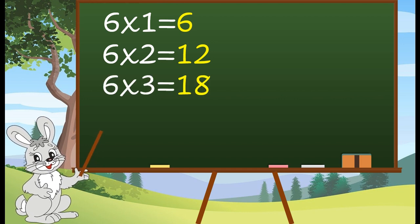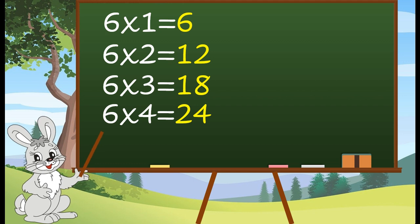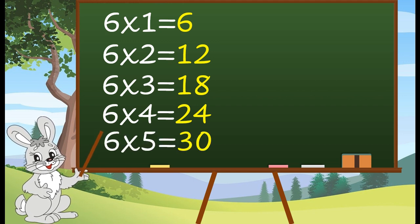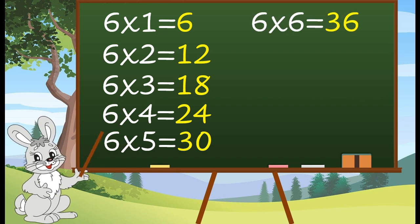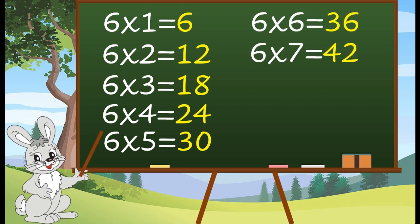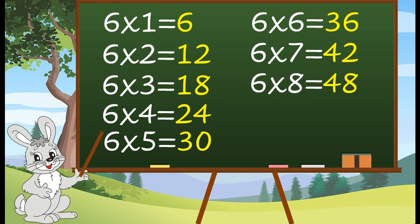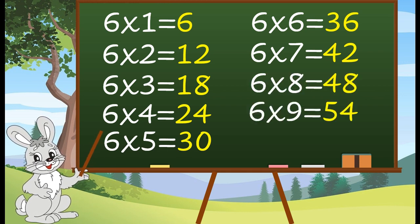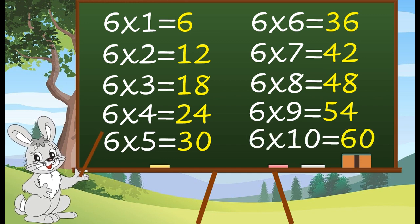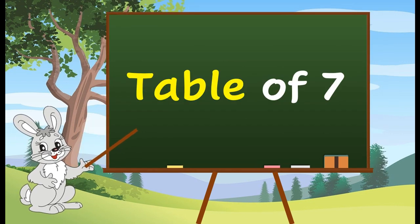6 3's are 18. 6 4's are 24. 6 5's are 30. 6 6's are 36. 6 7's are 42. 6 8's are 48. 6 9's are 54. 6 10's are 60.